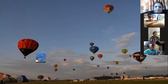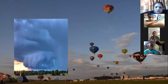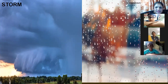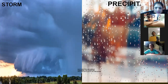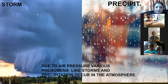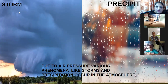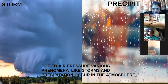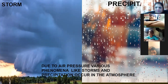Then we also saw the phenomena which occur because of this air pressure. We saw two phenomena which occur in nature, in the atmosphere — that is storm and precipitation. I explained what is storm, and I explained what is precipitation.